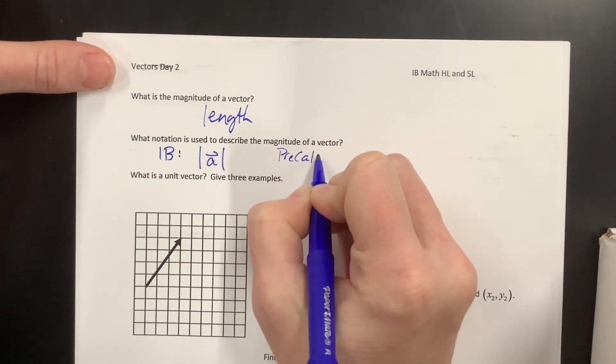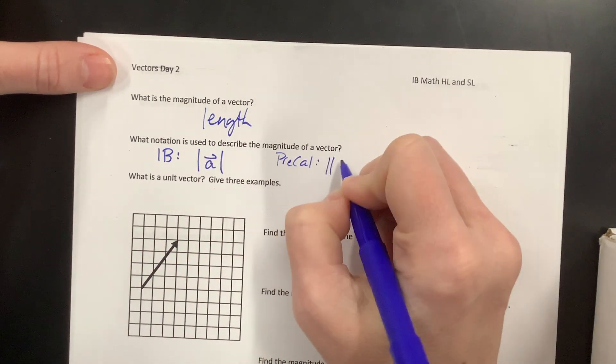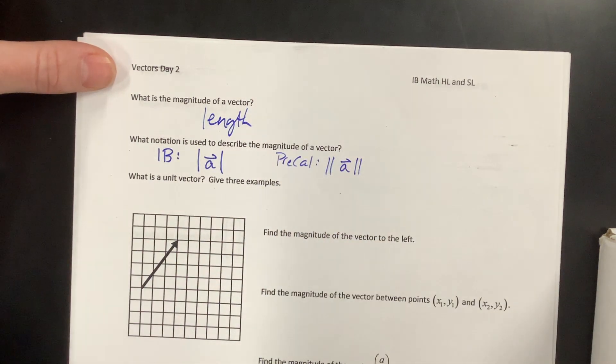In pre-cal, for whatever reason, they have to make it more complicated, and they would put a double set of bars to represent the magnitude.